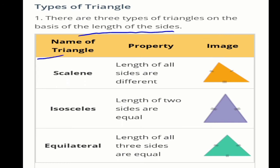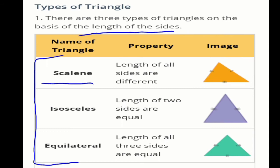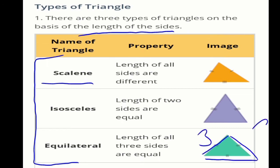First, on the basis of length of sides. The first is the scalene triangle — a triangle having all three sides different, for example sides of 3, 4, and 5. Second is the isosceles triangle — a triangle having 2 sides equal, for example two sides of length 3. Third is the equilateral triangle — a triangle which has all 3 sides equal, for example all sides equal to 3. So scalene, isosceles, and equilateral triangles are classified on the basis of sides.